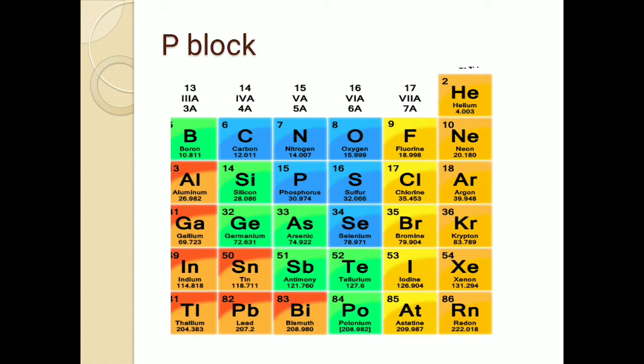We also learned about the periodic trends of some physical properties of these elements. Those are atomic and ionic radii, ionization enthalpy, electron gain enthalpy, and electronegativity.